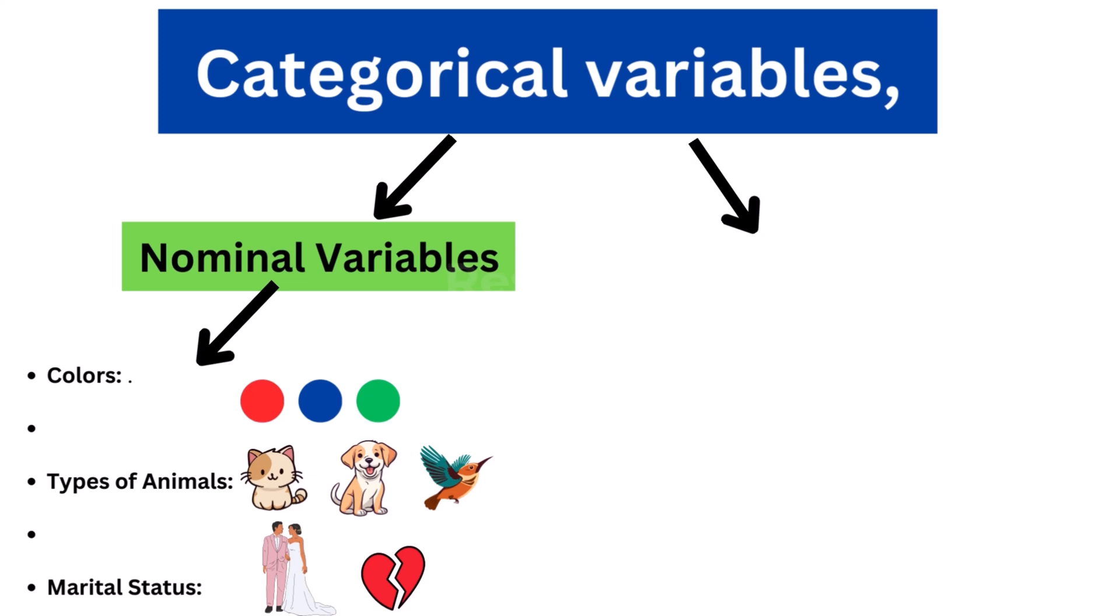For examples: Colors - red, blue, green. Types of animals - cat, dog, bird. Marital status - single, married, divorced. Nominal variables: There is no natural or meaningful way to compare or rank the categories. Each category is distinct and unrelated to the others.